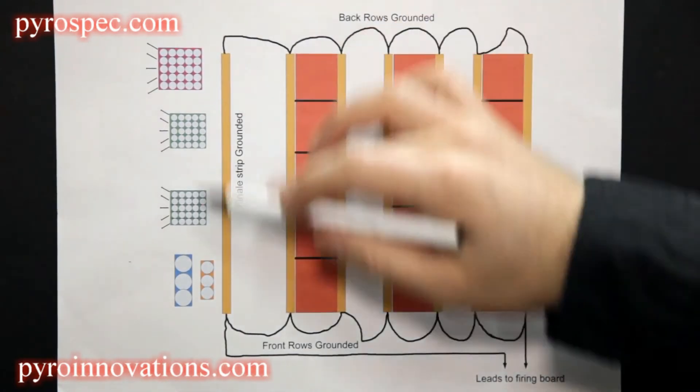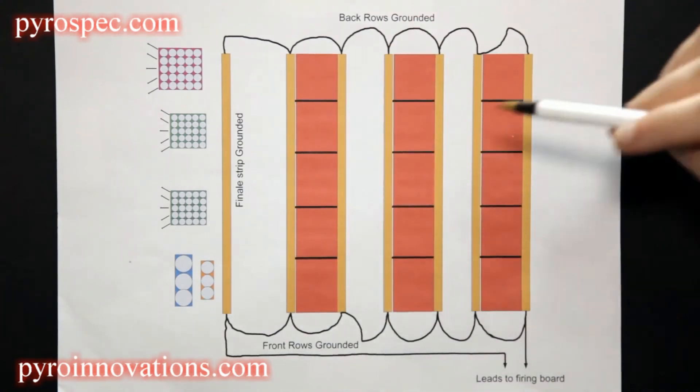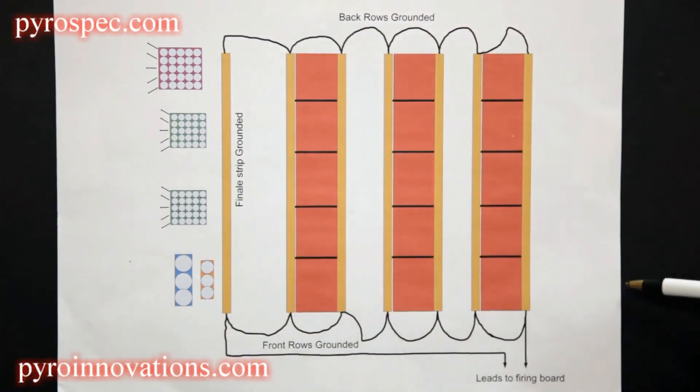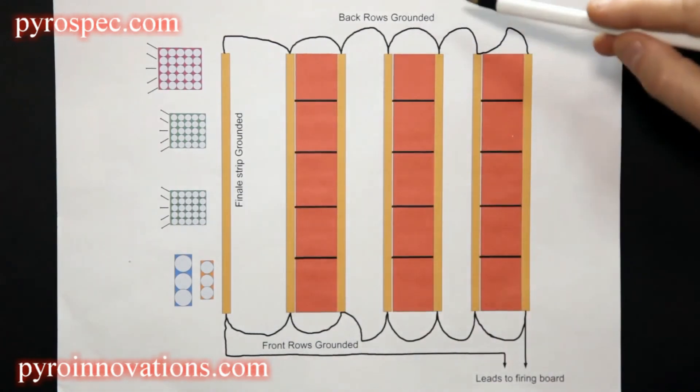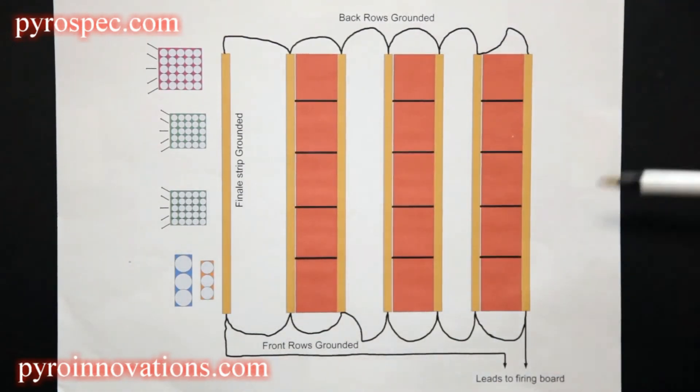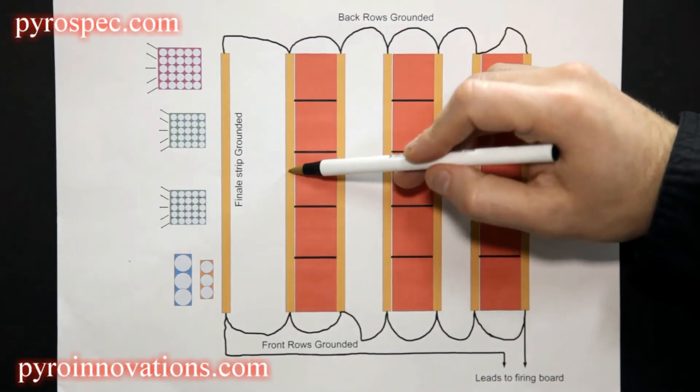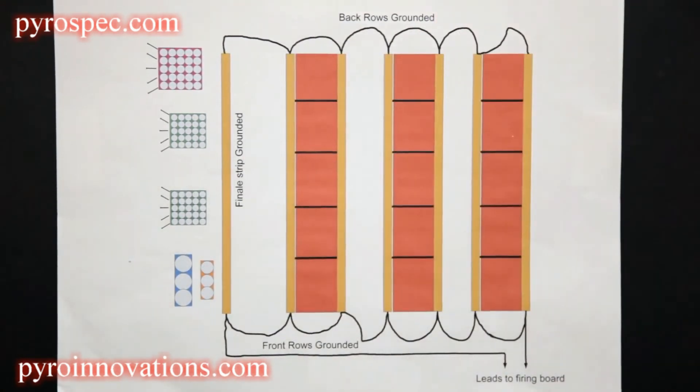So this type of redundant grounding gives you multiple ground paths such that a failure in different locations of your ground will not cause you to lose an entire strip or an entire section of your strip.